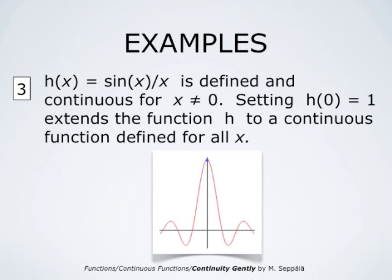The function h(x), defined by setting sin(x) divided by x for x different from 0, is continuous. We may set the value of h to be 1 at x equals 0, and if we do that, we get a continuous function defined for all values of x. This is so because the limit of sin(x)/x as x approaches 0 is 1. Therefore, h(x) becomes continuous at x equals 0 if its value at that point is defined to be 1.